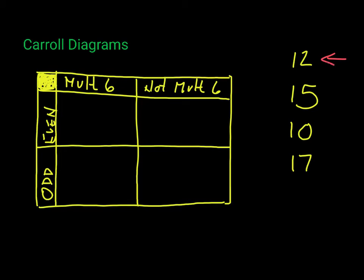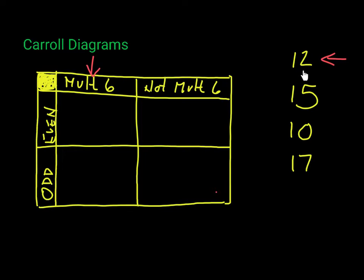Starting with 12: is it a multiple of six? Yes, it is, so it goes in this column. Is it an even number or odd? To tell the difference, just look at the last digit — if it's 0, 2, 4, 6, or 8, it's even. The last digit of 12 is 2, so 12 is an even number. We write 12 in the first box.